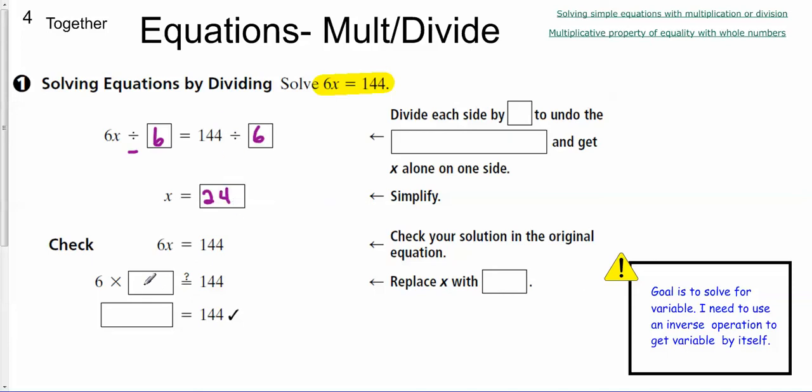And then we'll check. So 6x equals 144. So we'll substitute in and we'll multiply to check. So 24 times 6. 4, carry the 2. That's 12, 13, 14. I was right.